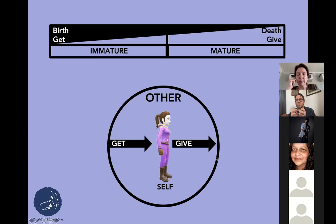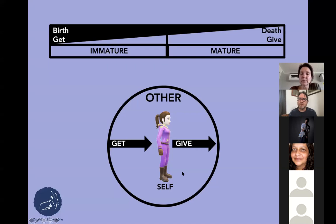This model of maturation — which sees maturation as a maturation of intent — is very useful. It's very simple because it's linear: a straight line going from birth to death, getting to giving. It's very helpful to give some understanding of the dynamics in the process of maturation. However, it has a shortcoming, and the shortcoming is its simplicity.